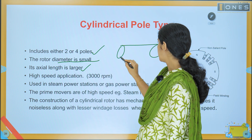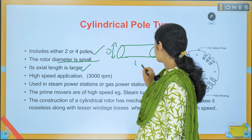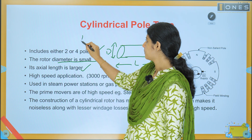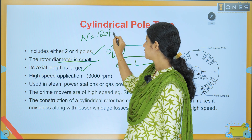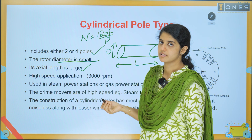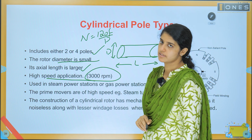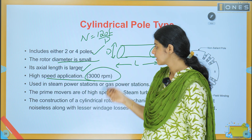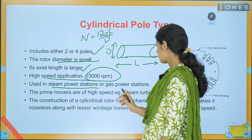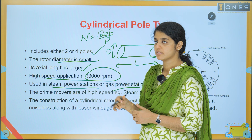The rotor has small diameter and longer axial length. The synchronous speed formula is N = 120F / P. Since the number of poles P is small, N will be large — this is a high-speed application, at around 3000 RPM range.